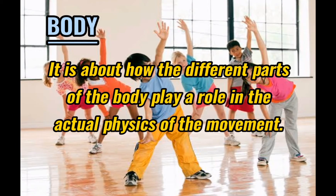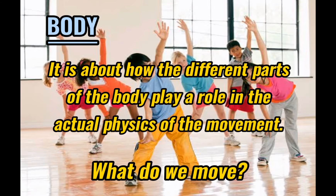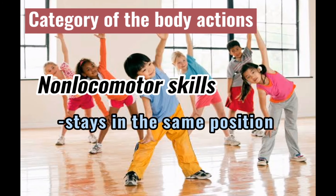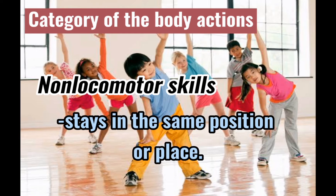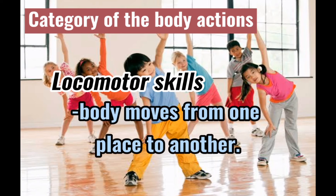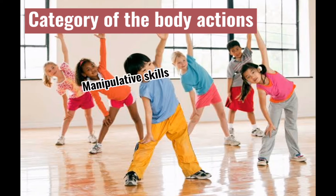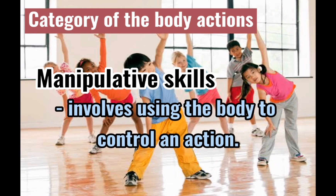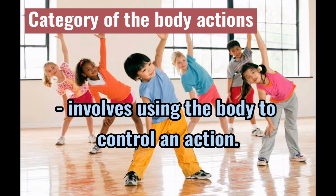First, Body. It is about how the different parts of the body play a role in the actual thesis of the movement. It questions what do we move. Categories of body actions include: locomotor skills, where the body stays in the same position or place; locomotor skills, where the body moves from one place to another; and manipulative skills, which involve using the body to control an action.